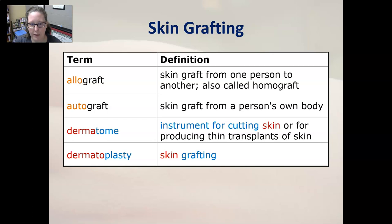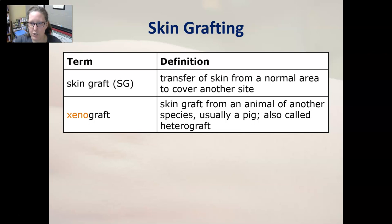A dermatome is the instrument that cuts the skin to produce a thin transplant of skin, and dermatoplasty is skin grafting. A skin graft, or SG, is the transfer of skin from a normal area to cover another site. Lastly, a xenograft is a skin graft from an animal of another species, usually a pig, also called a heterograft.